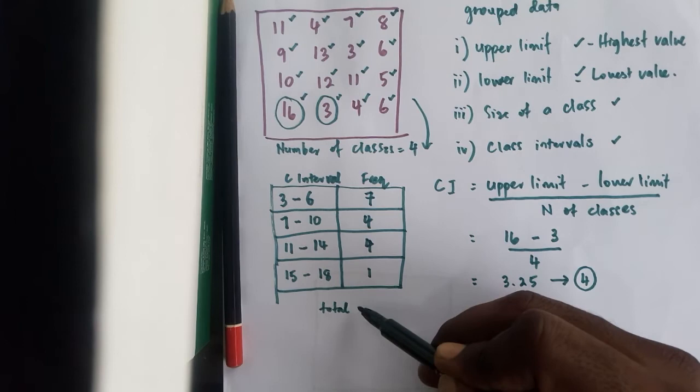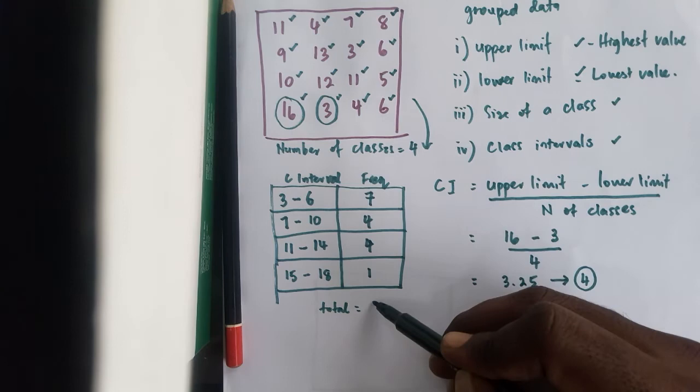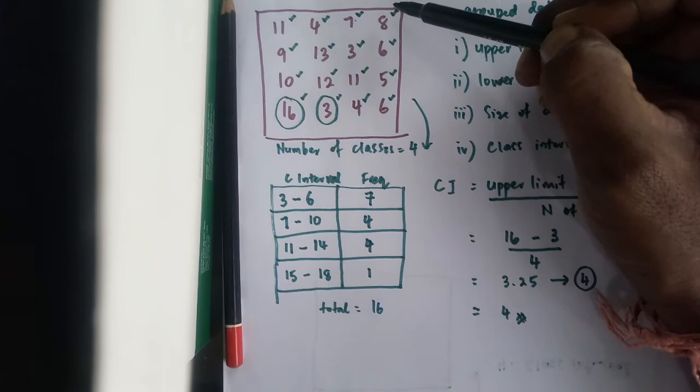So recalculate the total. 11 plus 4, 15 plus 1, 16. 1, 2, 3, 4, 5, 6, 7, 8, 9, 10, 11, 12, 13, 14, 15, 16.